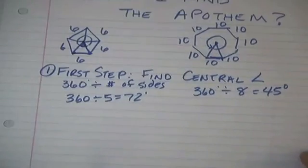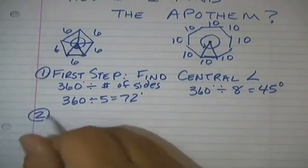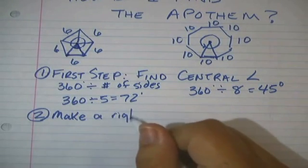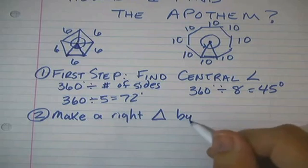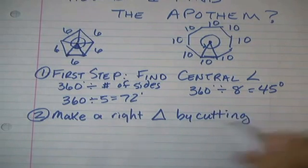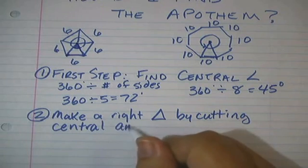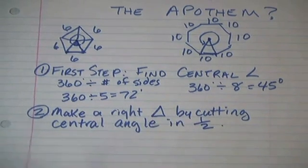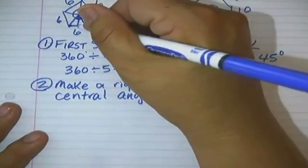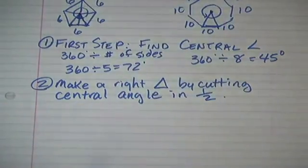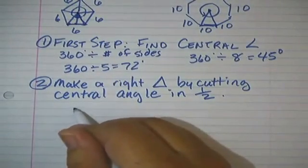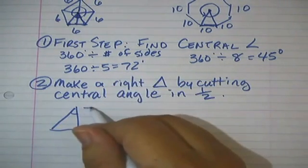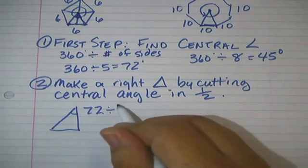The second step we have is we make a right triangle by cutting this triangle in half. So make a right triangle by cutting the central angle in half. And the reason I'm doing that is the apothem connects the center to the side. It cuts this side in half. So I'm trying to get to this apothem side. So I'm going to go ahead and draw a triangle here. This angle right here, if it was 72 degrees, it's not 72 degrees anymore. It's 72 divided by 2, which is 36 degrees.